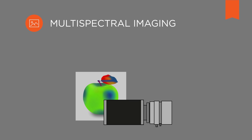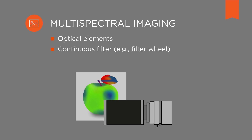There are three possible ways to gain spectral image information: a camera with optical elements, a continuous filter like the filter wheel, or a CMOS sensor with a filter.